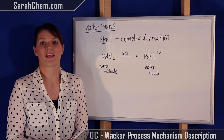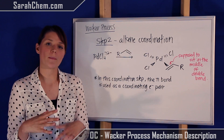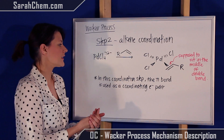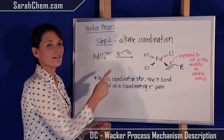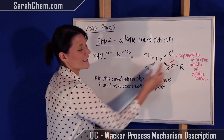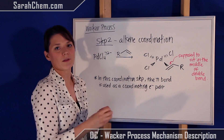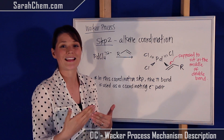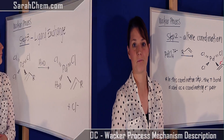Step two is alkene coordination. Coordinating with a metal means sharing electrons with that metal. We have the PdCl₄ from the previous step and a terminal alkene — in the Wacker process you must use a terminal alkene. The pi electrons are used to coordinate with the metal. The bond is shown sitting in the middle of those two carbons because both carbons participate in that pi bond, though technically one carbon shares the electrons with palladium.